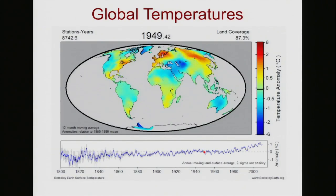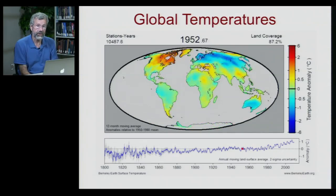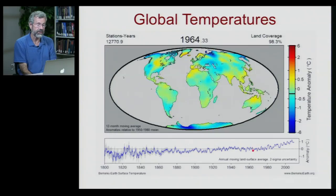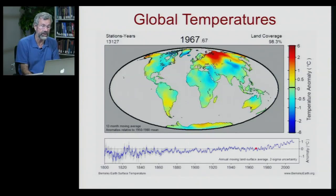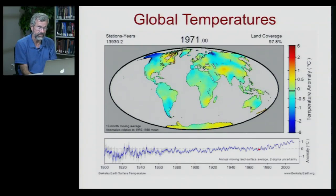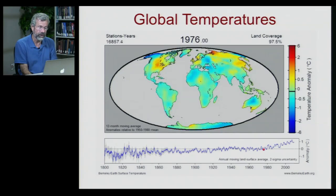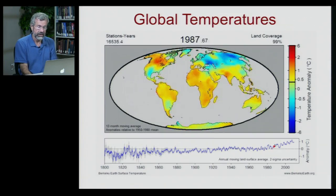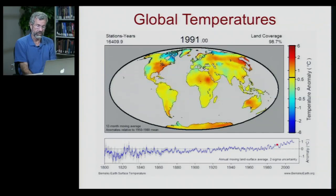Some of these temperature changes are actually because of volcanic explosions. Volcanoes not only throw out greenhouse gases but also a lot of dust, and the dust can block the sun's rays. There was a fair amount of volcanic activity in the 1950s. Now we're going up again, and it's getting serious — the 1980s, 1990s, it's never below normal.